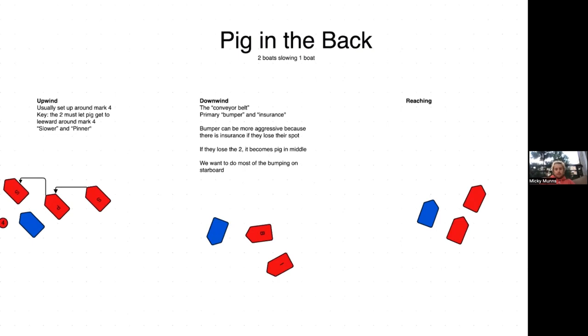The other way we can do it is to kind of both hit them together, but this is a little bit riskier. Basically one boat is the primary bumper and one boat is the insurance. The insurance's job basically isn't to bump necessarily, but is to prevent them from tacking and ducking them. We want to do basically all of our double teaming on starboard because the consequences for screwing it up on port are super high. They could jibe onto starboard and get both of you.